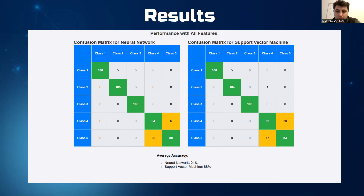However, SVM was faster in processing. So if speed is a critical factor, it might still be a viable option. But for accuracy, the neural network is the clear winner here.